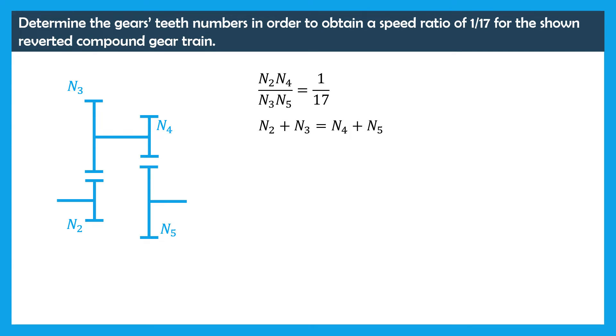In this problem, we aim at finding the number of teeth of the 4 gears, thus we have 4 unknowns. There are 2 conditions that we need to satisfy while determining the gears teeth numbers, thus we have 2 equations. Hence, for this problem, there might be infinite number of solutions.